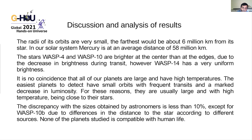Our results show that the orbital radii are very small — some orbits are about 6 million kilometers. In comparison, Mercury is 58 million kilometers from the Sun, so these planets are extremely close to their stars. WASP-4 and WASP-10 are brighter at the center than at the edge, while WASP-14 is fairly uniform. It is no coincidence that these planets have high temperatures: exoplanets that are easily detected tend to have small orbits with frequent transits — only 2 to 3 days — and a marked brightness decrease because they are very large and very close to the star.